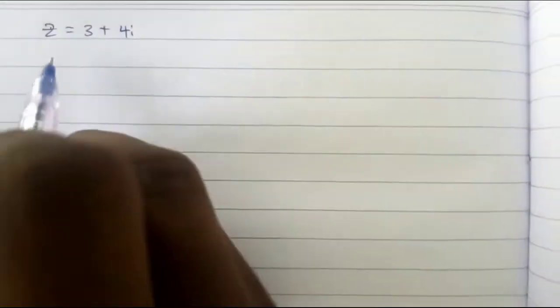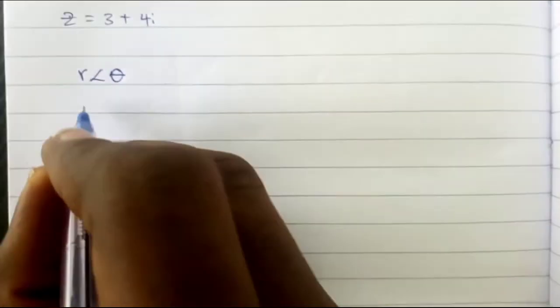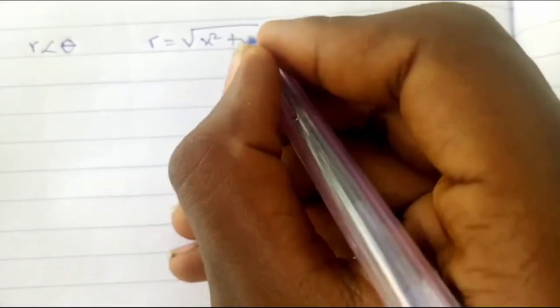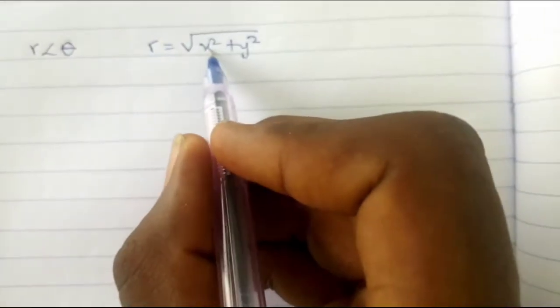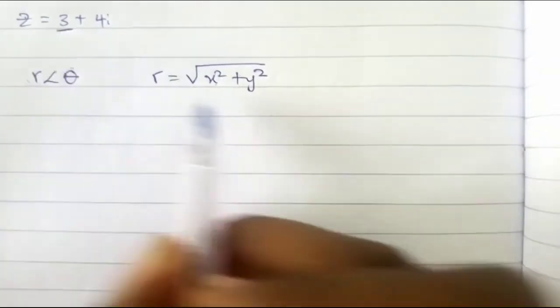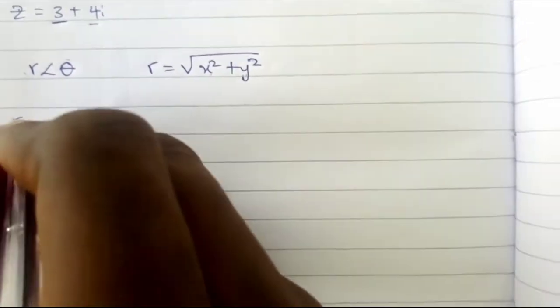I've been given this complex number to translate in its polar form. Mind you, polar form is written as r angle theta. This is the polar form of a complex number. From what we've done earlier, we look for our r and then we look for theta. How do we get our r? We remember r is equal to the square root of x squared plus y squared. Our x signifies the real part which is 3, then our y signifies the imaginary part which is 4.